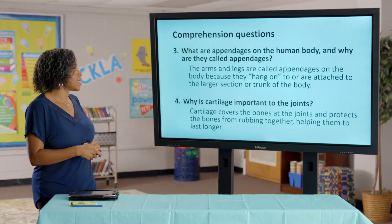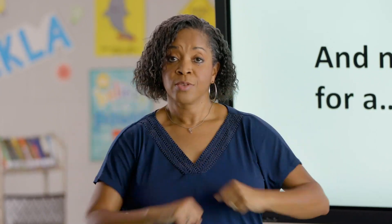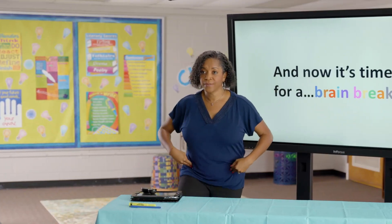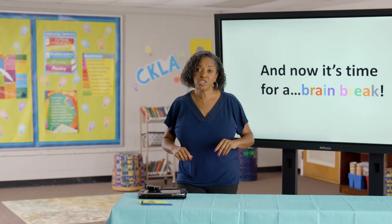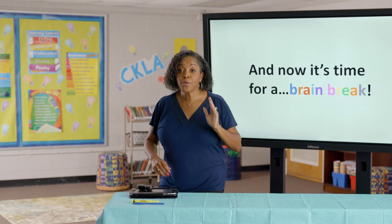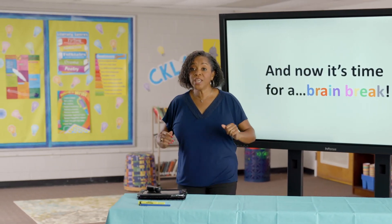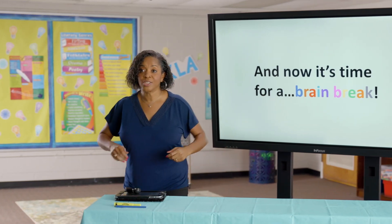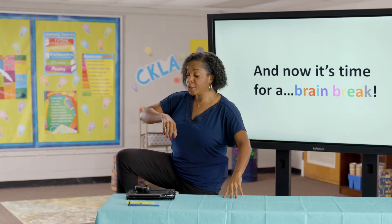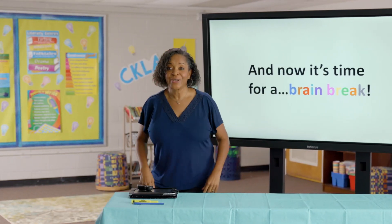And now it is time for a brain break. We learned about two different movements that bones make today. Stand up! We learned about ball and socket — your shoulders and your pelvic, because they can go around in a full circle. Then we learned about hinge joints — hinge joints just move back and forth one way. I'm going to call out a term: if I say ball and socket, move your arm or your leg in a circle; if I say hinge, show me hinge — your knee going back and forth. You've got to be ready, I'm going fast.